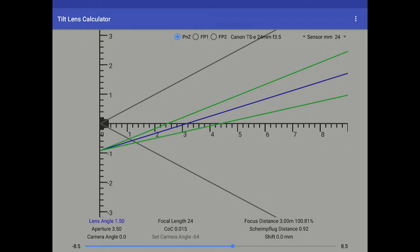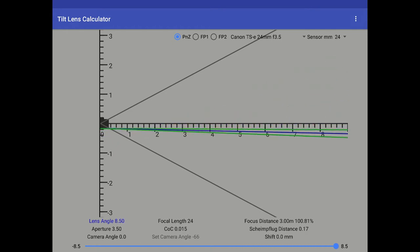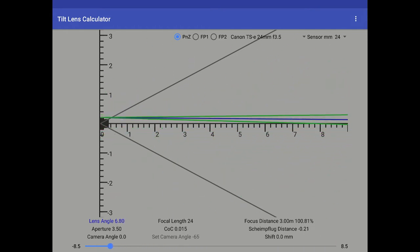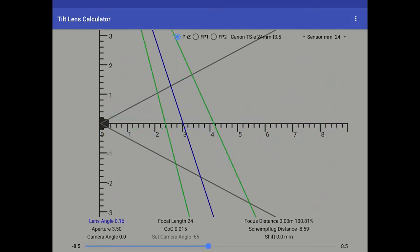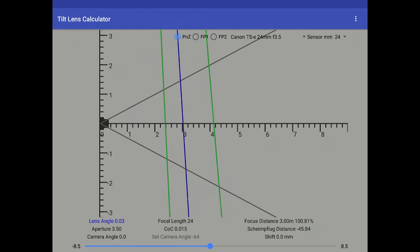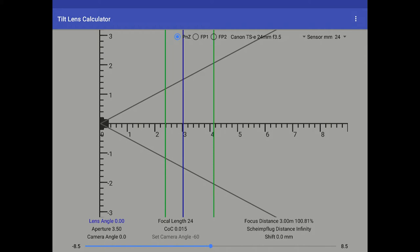So you can change the angle from, in this case, eight and a half degrees one way to eight and a half the other. The limits of the lens angle will depend on the lens you have selected. The focal length, you can't adjust unless you have selected the custom lens.